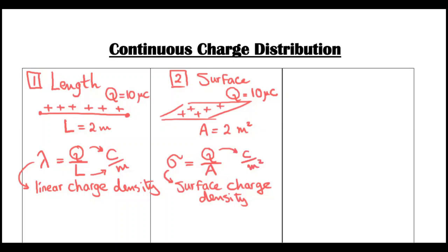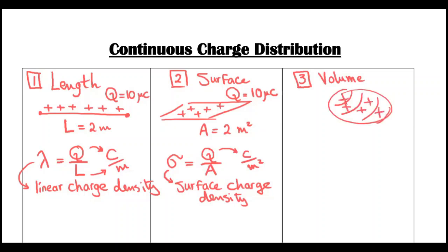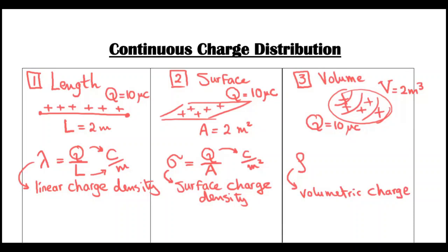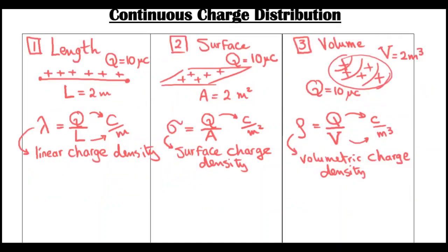The third type of distribution is when the charge is distributed over a volume. We have a sphere charged with total charge Q, say 10 microcoulombs, and volume V, say two meters cubed. We define rho (ρ) as the volumetric charge density — the charge in one meter cubed of the object. Rho equals Q divided by the volume, and its unit is coulombs per meter cubed.